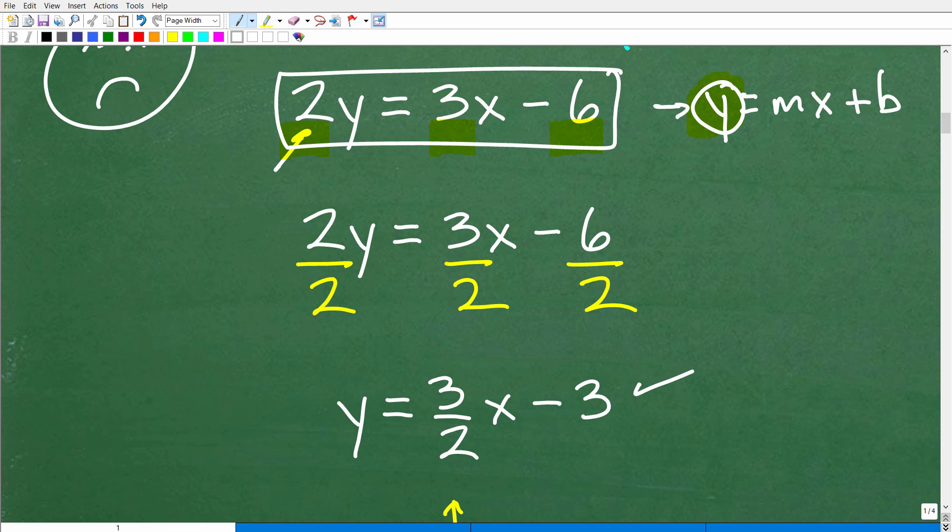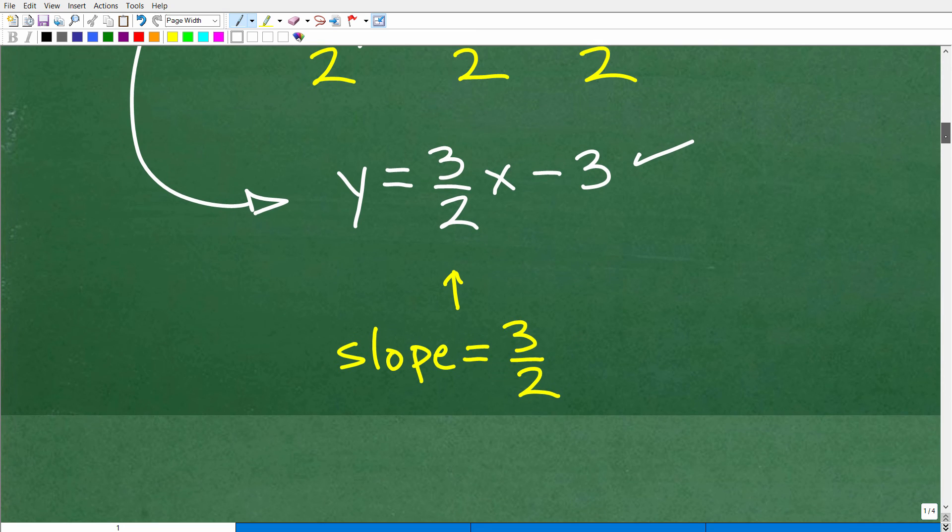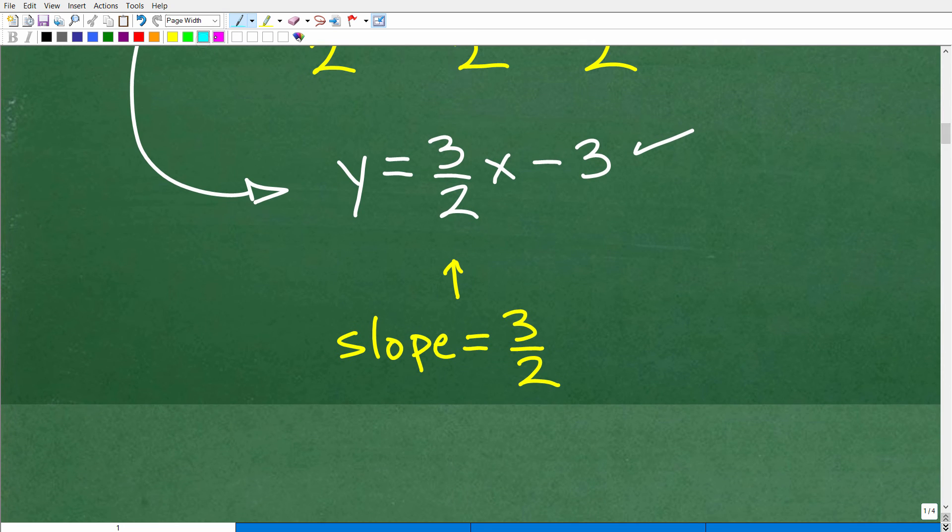Okay, so what we just did here is took this linear equation and just wrote it into y equals mx plus b form. This is what we call the slope-intercept form of the line. But the whole idea here is that once you have this line in y equals mx plus b form or slope-intercept form, the number, okay, in front of the x, the coefficient in front of the x is, in fact, the slope.